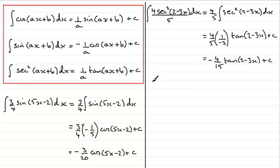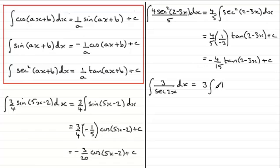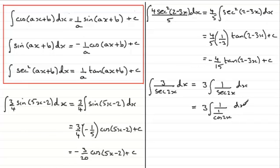Here's one that doesn't look like one of these at first until we modify it. It's the integral of 3 over sec(2x). We see this as 3 times the integral of 1 over sec(2x) dx. Remembering that sec(2x) is 1 over cos(2x), we simplify the stacked fraction by multiplying top and bottom by cos(2x), giving 3 times the integral of cos(2x) with respect to x.